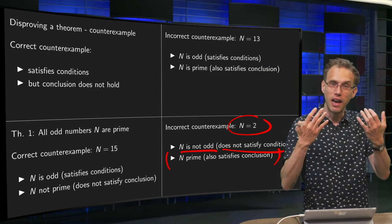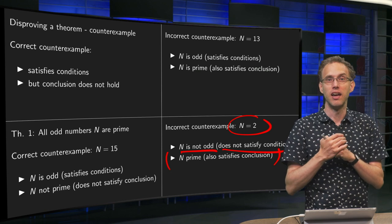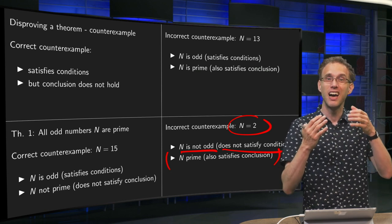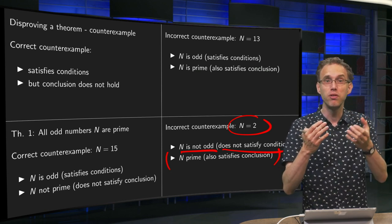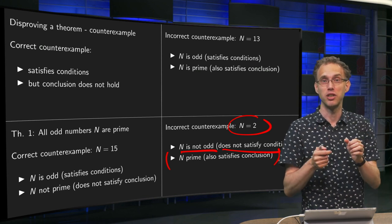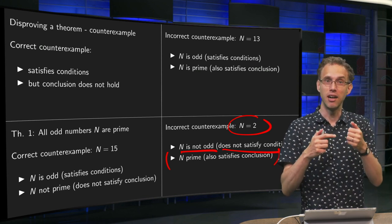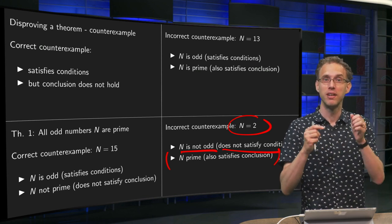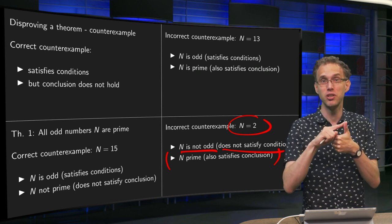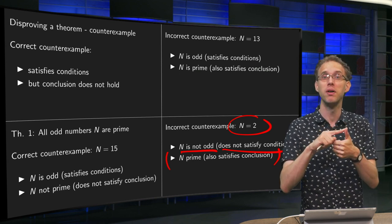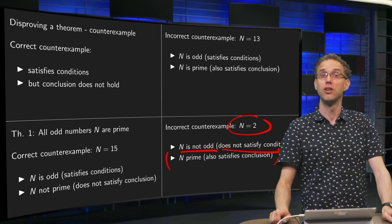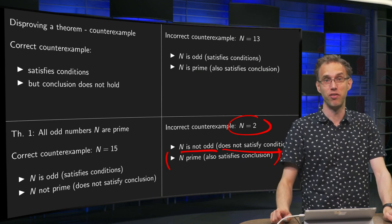This was an example showing how to disprove a relatively simple theorem using a counterexample. The essence is this: a counterexample satisfies the conditions of the theorem but does not satisfy the conclusion of the theorem.